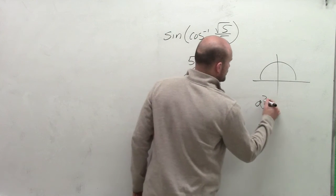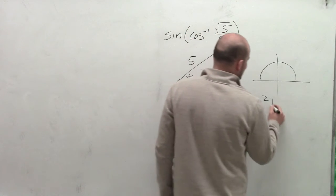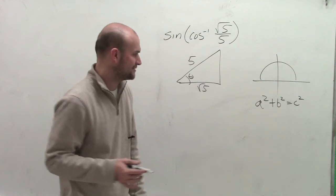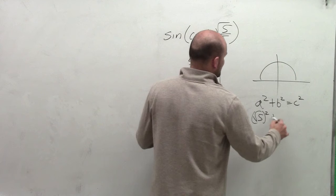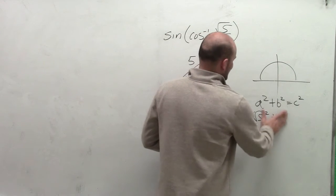So we're going to use the Pythagorean Theorem. So a squared plus b squared equals c squared, or leg squared plus leg squared equals your hypotenuse squared. So we have the square root of 5 squared plus b squared equals 5 squared.